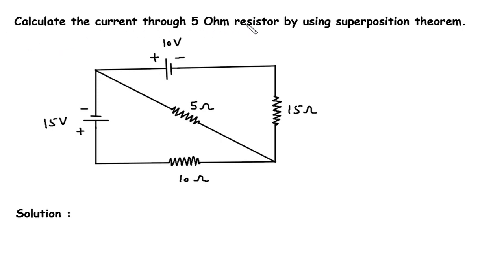Calculate the current through the 5 ohm resistor by using the superposition theorem. We have to calculate the current through this 5 ohm resistor using superposition theorem.